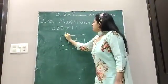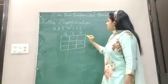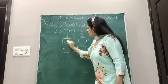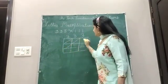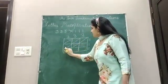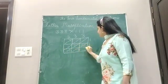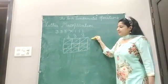Now the multiplicand you have to write here on top, and here you will write the multiplier. Then you have to join the diagonals. Now start multiplying.